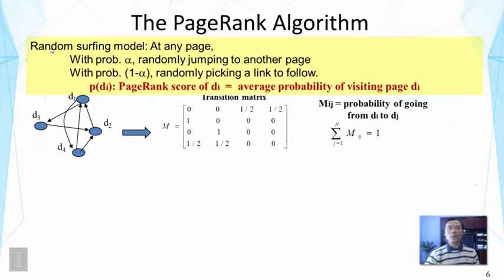In this random surfing model, at any page we assume a random surfer would choose the next page to visit. This is a small graph here — an oversimplification of the complicated web — but let's say there are four documents: d1, d2, d3, and d4. A random surfer can be on any of these pages. If the random surfer is at d1, with some probability it will follow the links. There are two out-links here: one pointing to d3 and the other to d4.